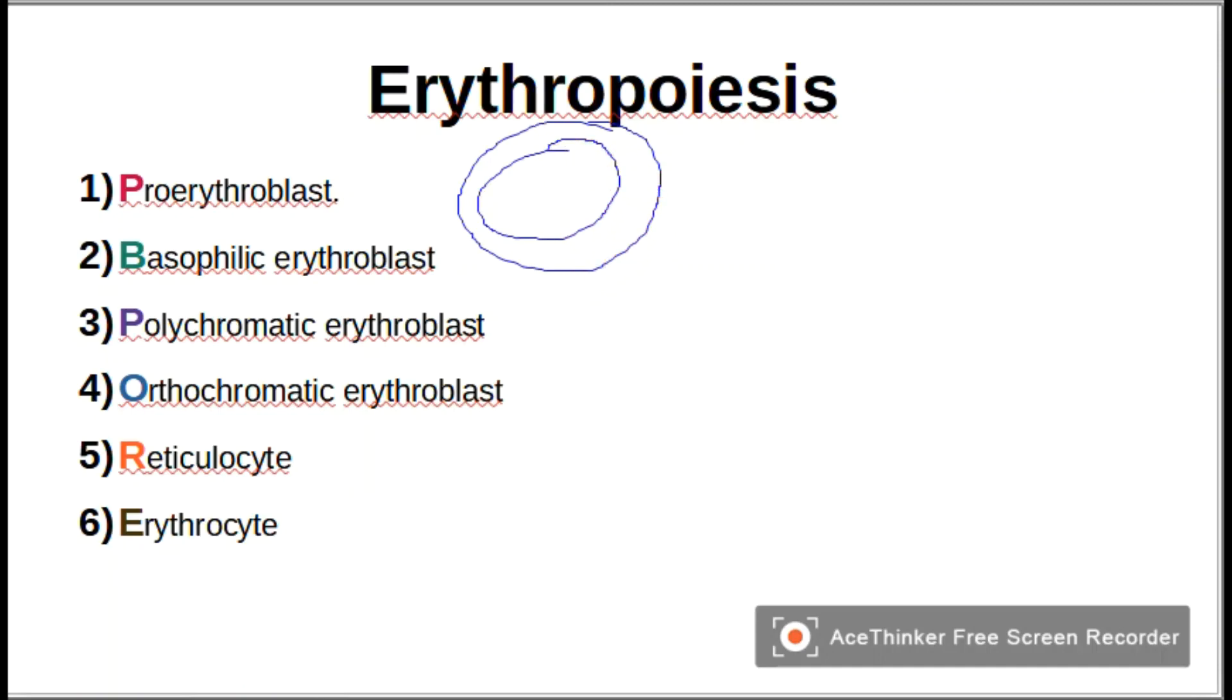The second one is basophilic erythroblast. It is smaller than the first one and has a small nucleus in it. It also stains blue due to ribosomal RNA present in it.